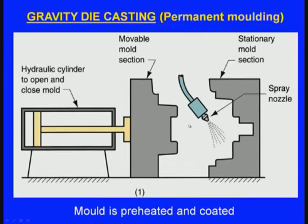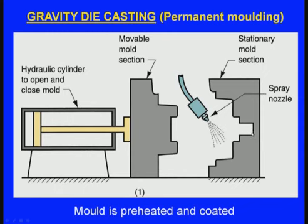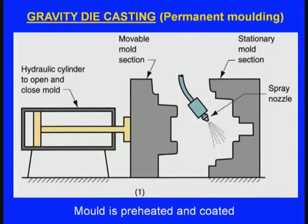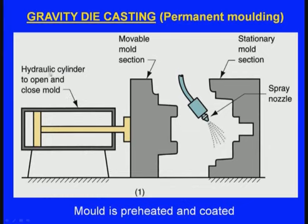Initially the mould is preheated and coated with a spray on the cavity surface. A hydraulic cylinder opens and closes the movable mould, exerting intensive pressure so the mould moves forward and backward. The two moulds are then fully closed — there is no gap between the fixed and movable mould. If we want a recess inside the casting, we can place a core. Once fully closed, pressure is applied so the two dies are completely shut.